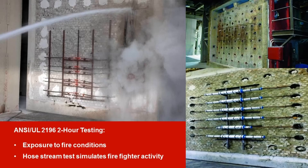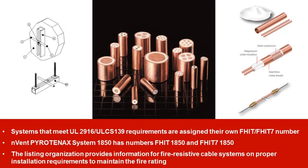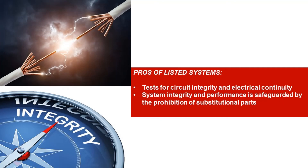For system certification, Underwriters Laboratory assembles fire-resistive cable systems exactly per each manufacturer's instructions and then tests the entire system to ANSI UL-2196. This system testing consists of two hours of exposure to fire conditions followed by a hose stream test to simulate firefighter activity. Systems that meet UL-2196 requirements are assigned their own FHIT number. For example, Enven Pyrotenics System 1850 is FHIT 1850. UL insists on a complete system listing, ensuring that no substitution of parts can be made that would compromise the integrity and performance of the system in its entirety.